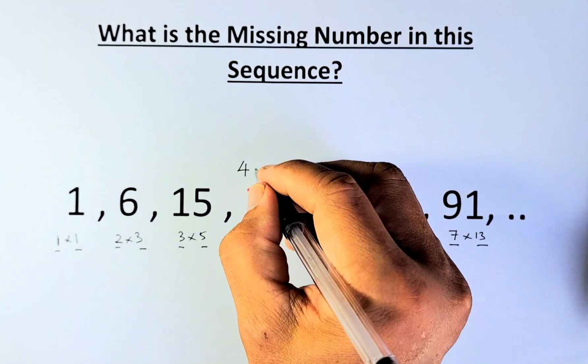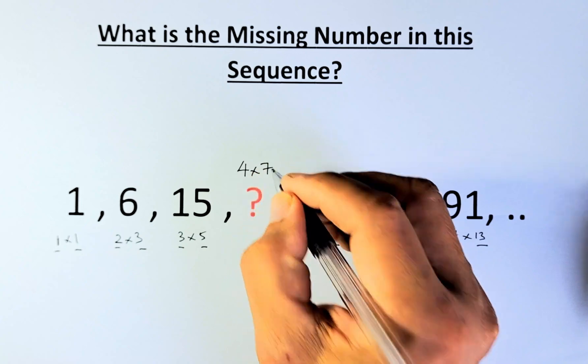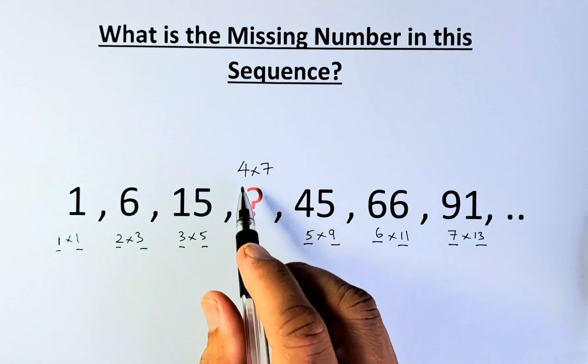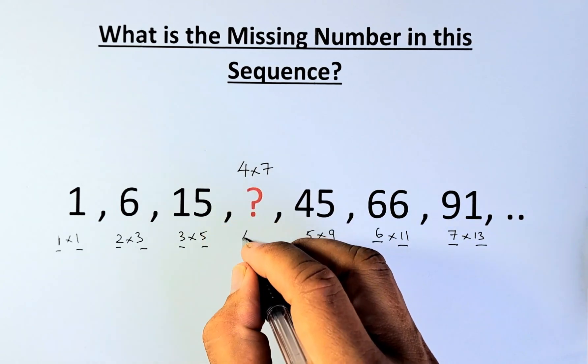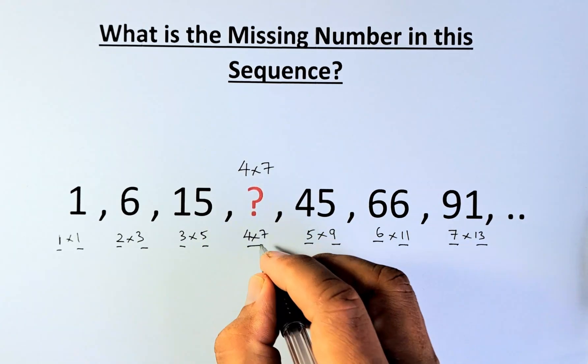So the missing number has to be 7. You are going to multiply 4 by 7, and then it will form a pattern. 4 times 7, that will give you 28.